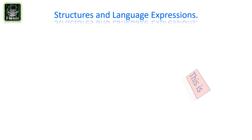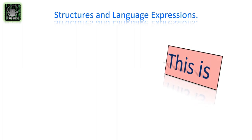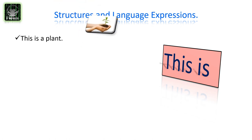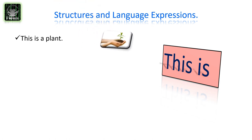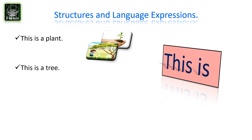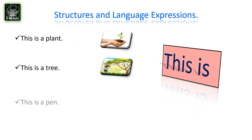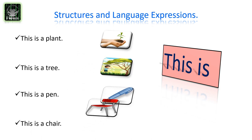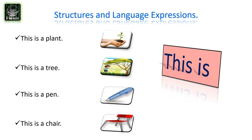Let's look at some more examples: This is a plant. This is a tree. This is a pen. This is a chair.